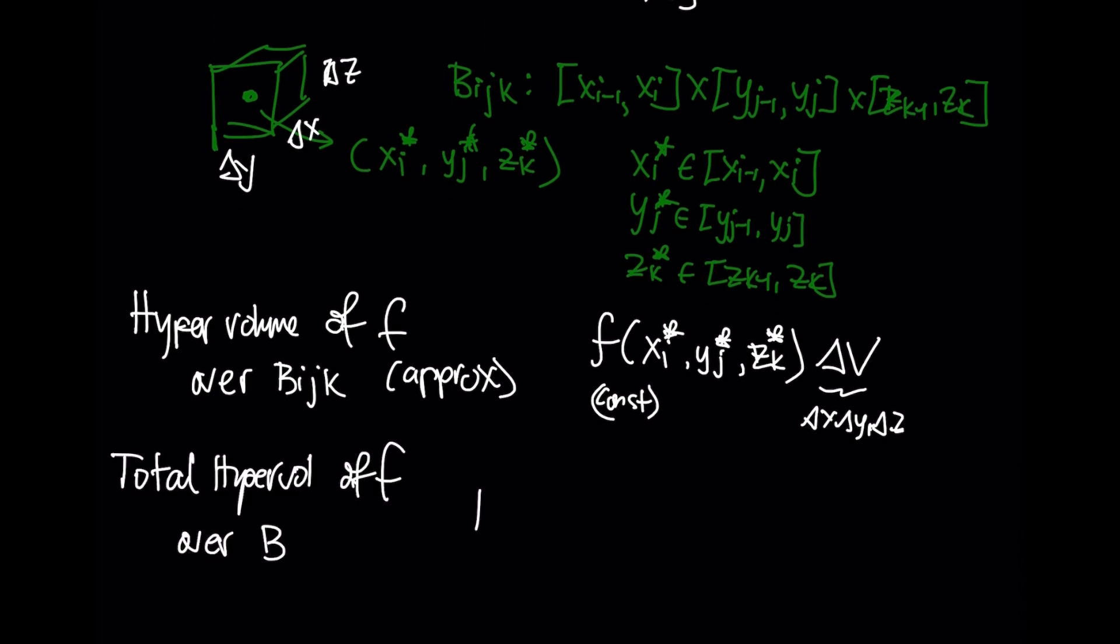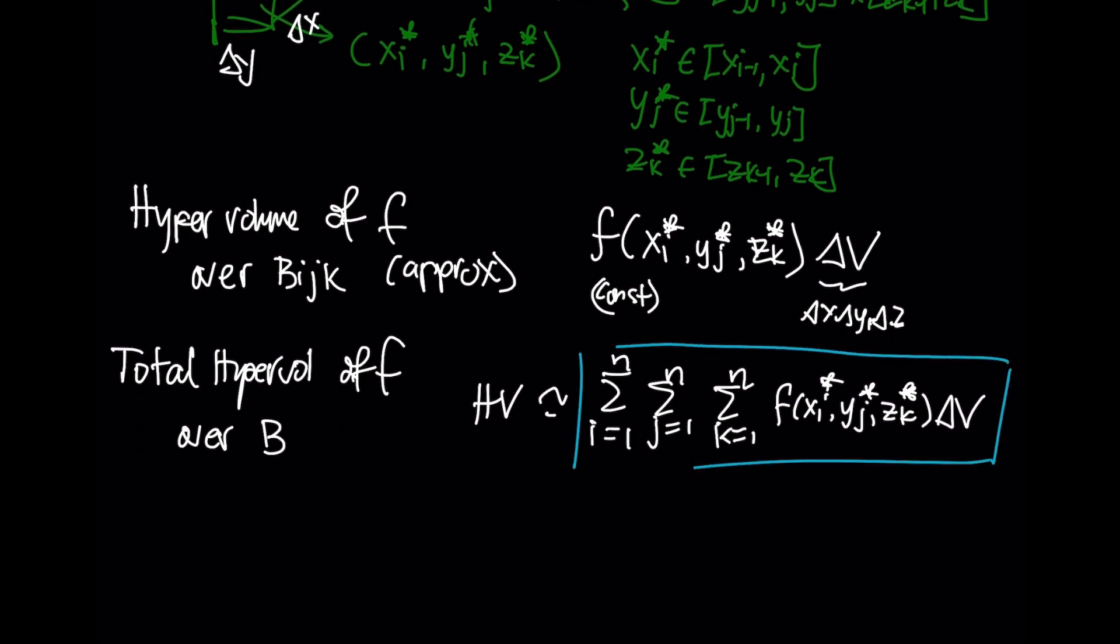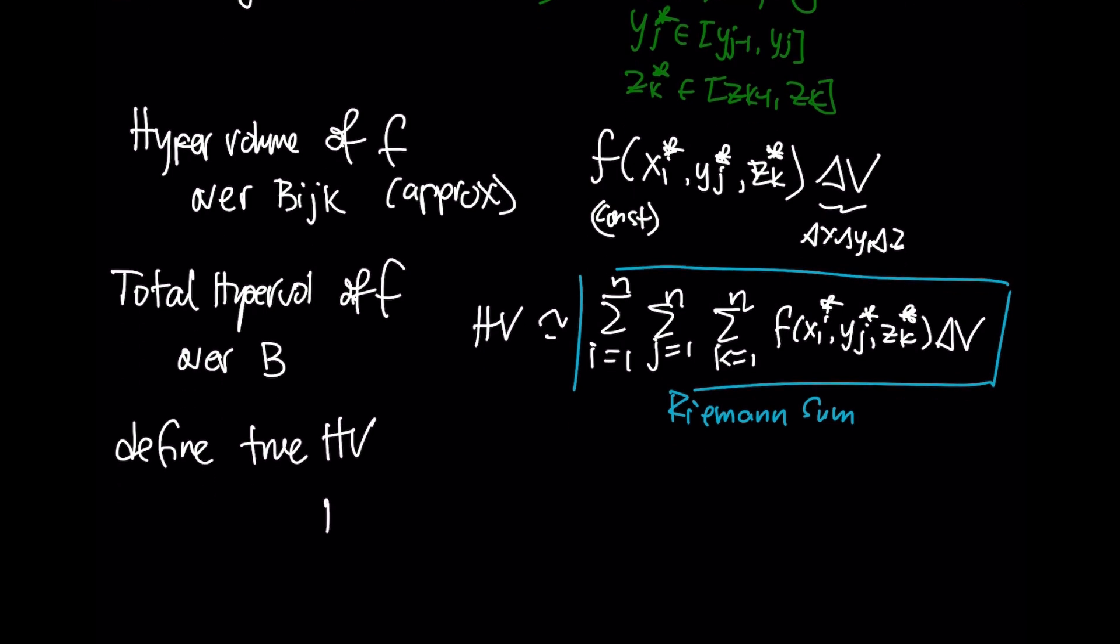The total hypervolume of F over all of these Bs, approximately a sum I equals 1 to N, a sum J equals 1 to N, a sum K equals 1 to N, of all of these individual hypervolumes over each box. This is a Riemann sum. Now this shouldn't come as a surprise to you. It is the same process that we always do. Now we are going to define the true hypervolume as a limit of this Riemann sum, just going to put in this exact same quantity here.